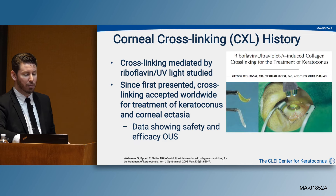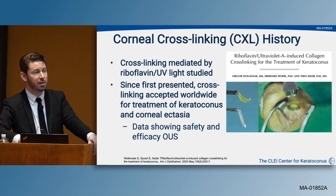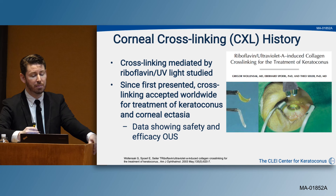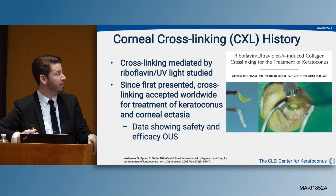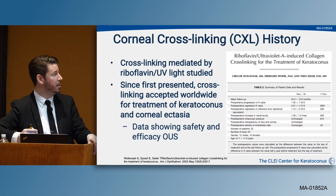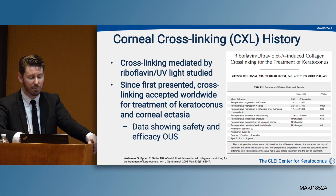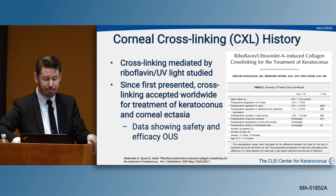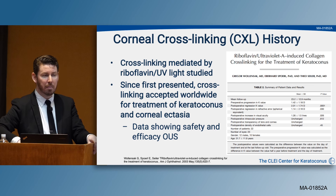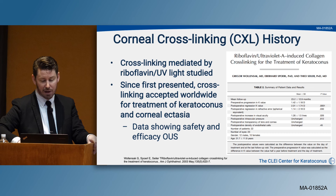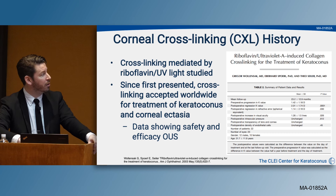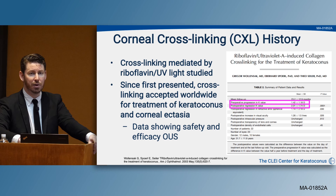Corneal collagen cross-linking is not new. This 1997 paper out of the University of Dresden — Theo Seiler and his team — looked at many candidate agents to strengthen corneal collagen. They found the most effective was the combination of UV plus riboflavin, which was most statistically significant for stiffening the cornea. Cross-linking has since been accepted as the worldwide treatment for progressive keratoconus and corneal ectasias. The seminal data mirrors US clinical trial findings: untreated progressive keratoconus progresses about 1.5 diopters, while those treated with cross-linking actually flatten by about 2 diopters.